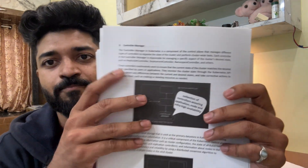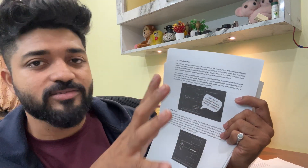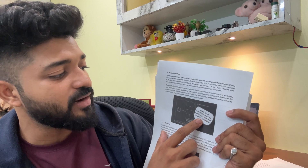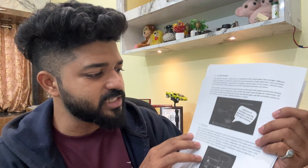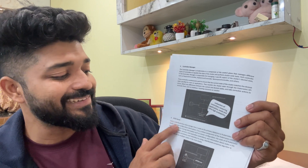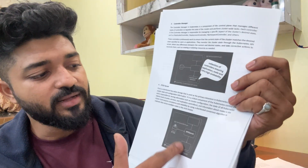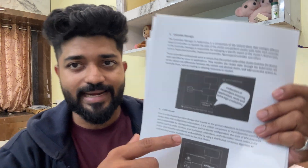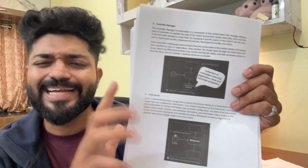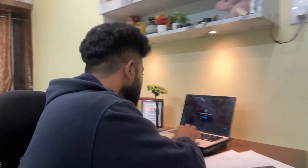The controller manager is the brain of Kubernetes — it has the thinking capability. It is a collection of controllers: application controller, node controller, infra controller, all kept under the controller manager. Etcd is the database of Kubernetes; everything done from outside or inside the cluster is stored in etcd. Once you get the notes, you will be able to understand everything in depth.